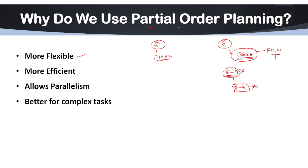Partial order planning is more flexible and more efficient. It avoids unnecessary decisions. POP only focuses on important action ordering. It allows parallelism. Since not all actions are ordered, some steps can happen at the same time. That is called concurrent actions.